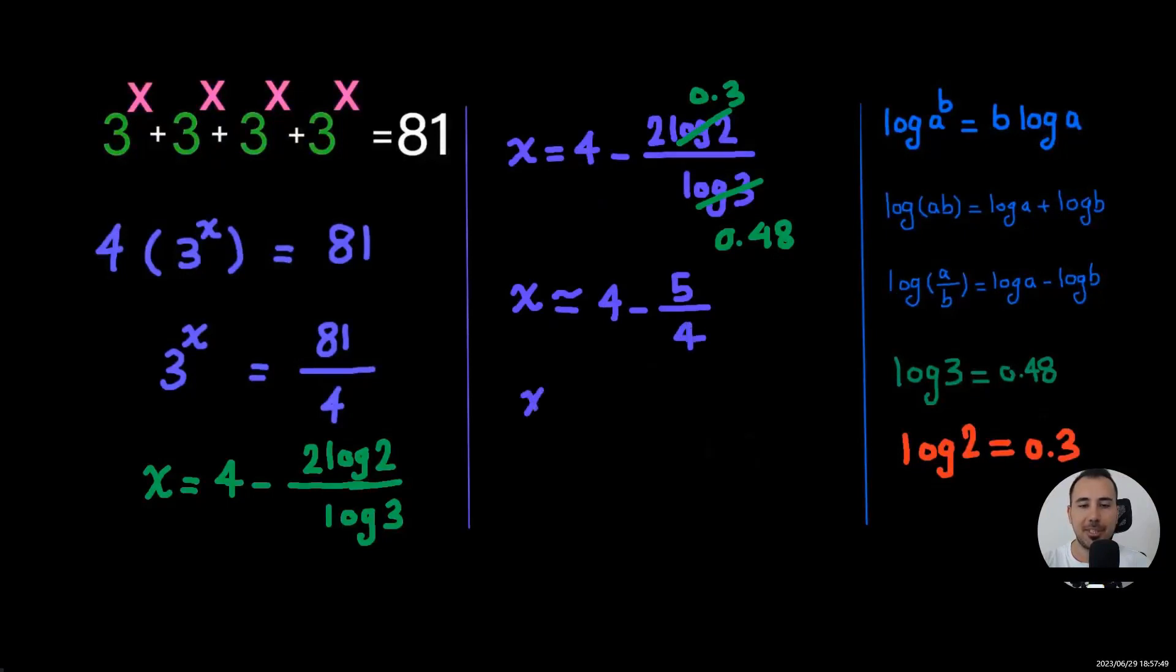So there you go. We found our approximation. This is 2.75. That's the decimal value that we're looking for. I hope you found the video useful. Thank you.